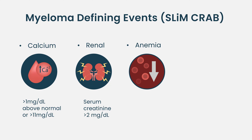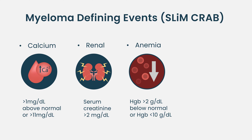The A of the CRAB criteria was anemia, which was basically a drop in hemoglobin — greater than two grams below the lower limit of normal, or a total hemoglobin less than 10 gram per deciliter.